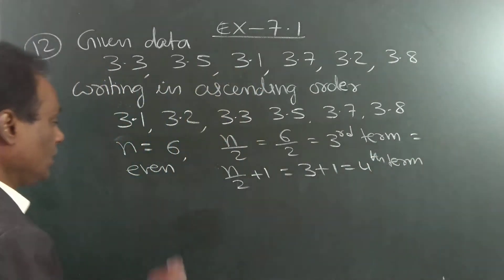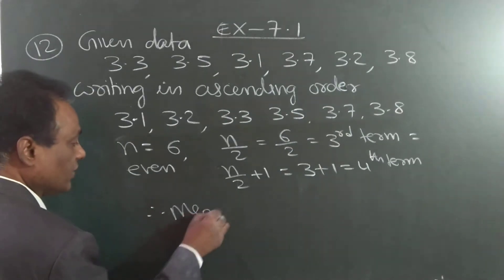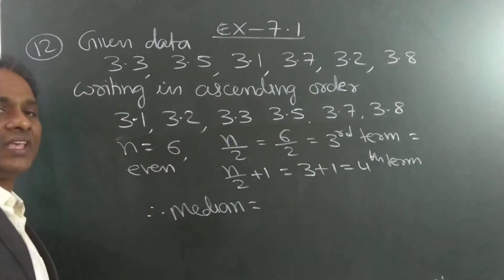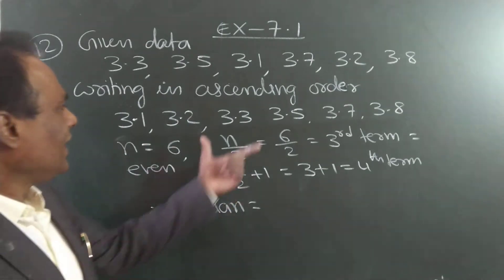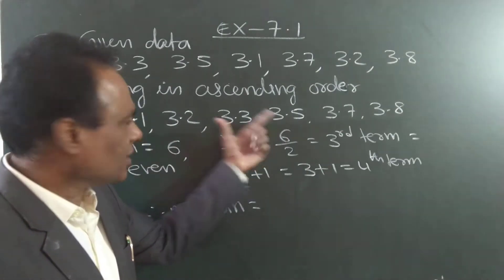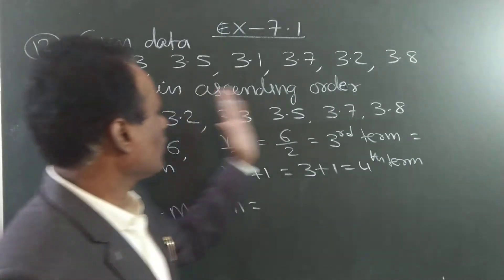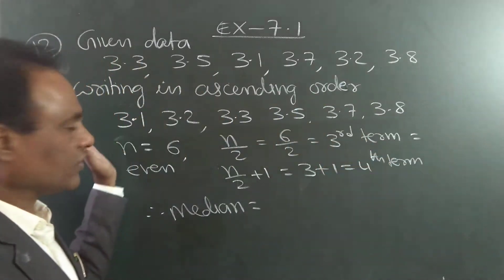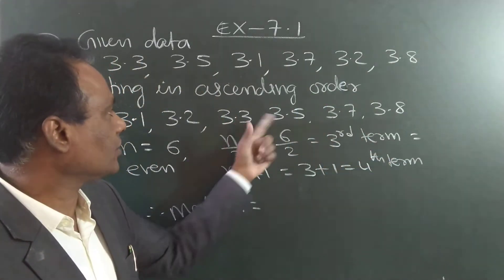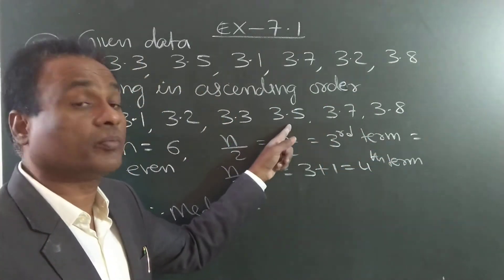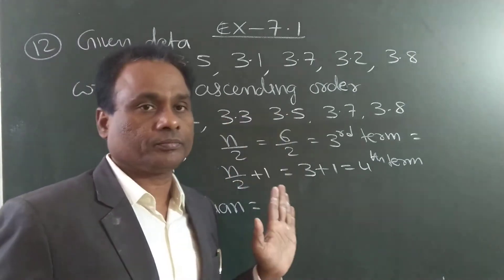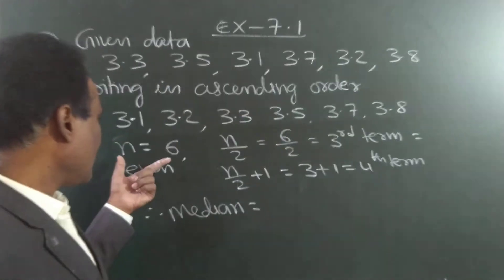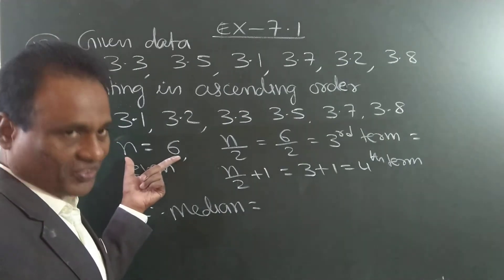So, median is equal to the average of these two middle terms. Directly we can find the middle terms: remove first and last, remove second and last — these two are the middle terms. This plus this, divided by 2, is the median.